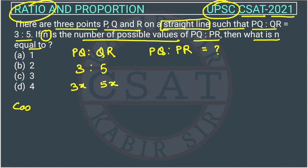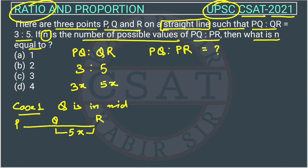Suppose Q is in the mid. Q is the midpoint. This will be PQ and this is QR. QR will be 5X from here to here, and PQ is 3X from here to here, this is 3X.